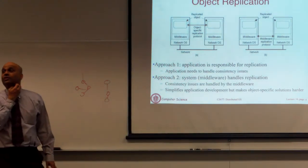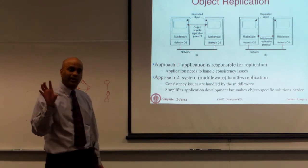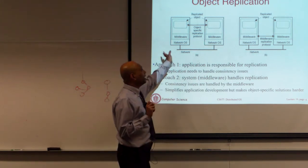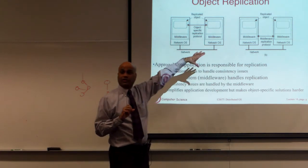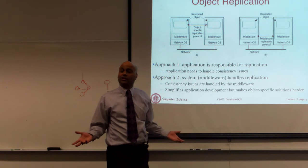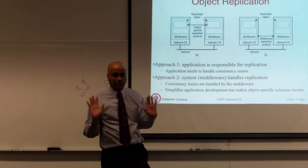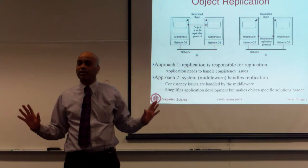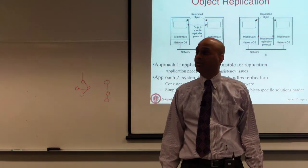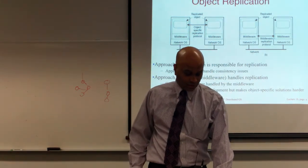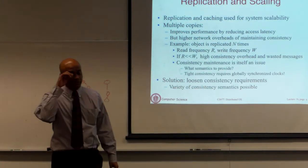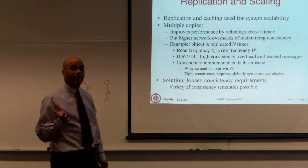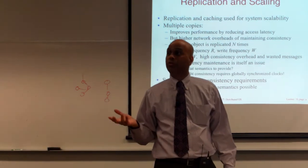We are going to switch gears and focus on consistency. We'll assume there are replicated objects, updates are coming, and we want to see how to ensure that every replica sees a consistent view — whether done at the application level or the middleware level. To understand consistency guarantees, I want to explain the issues behind replication and scaling, because they are related to this notion of consistency.